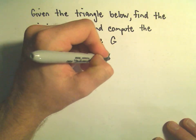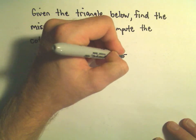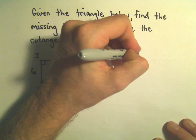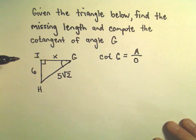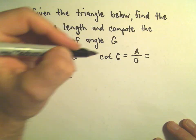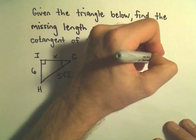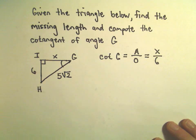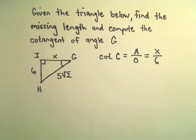So remember cotangent of an angle. Tangent is opposite over adjacent. Cotangent is going to be the adjacent over the opposite. The opposite side we already know is 6. The adjacent side, though, is this value x, and that's what we're going to have to figure out.